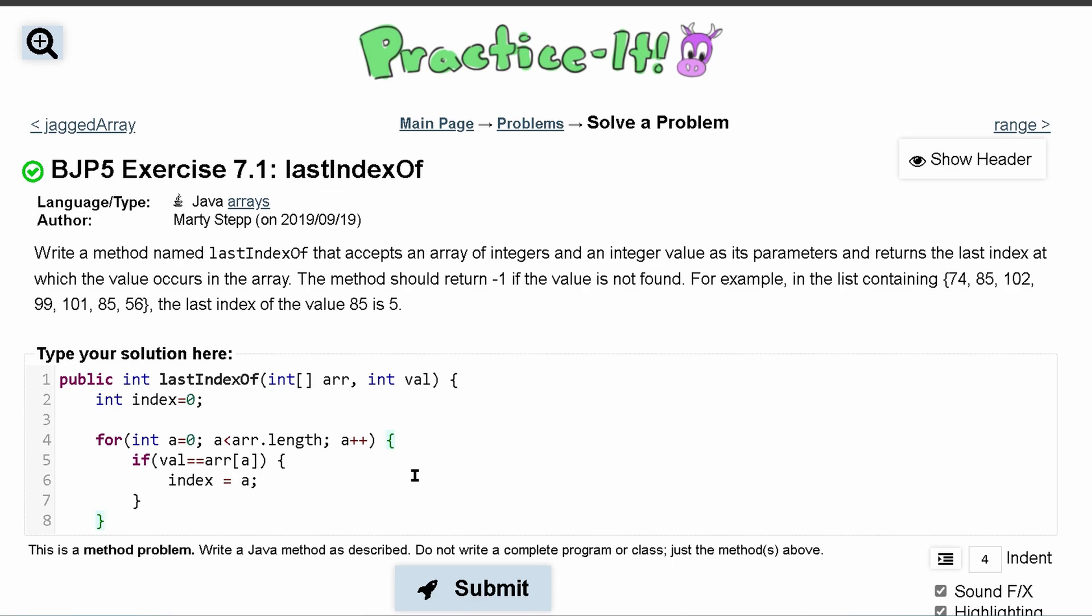Now we want to then just return this, right? So we could say if this value compared to this is the same, then just return index.